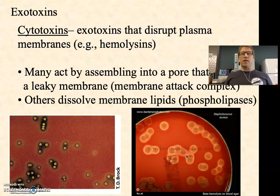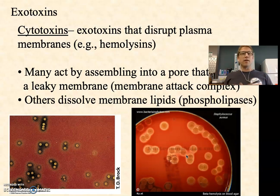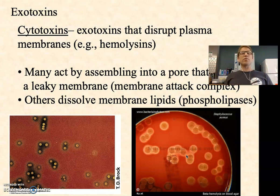Hemolytic toxins are also called hemolysins, cytotoxins, or cytolytic toxins — they all mean the same thing. Cyto means cell, lytic means splitting, hemo refers to red blood cells. These toxins can lyse or rupture red blood cells, which is something we can detect in the lab, which is where they get the name hemolytic toxins or hemolysins. On blood agar plates — which are just a nutrient agar with normal nutrients plus fresh red blood cells, usually from sheep — bacteria will grow in colonies, and if they can secrete a hemolytic toxin, they'll create a clearing zone.